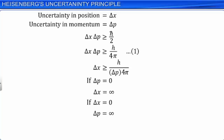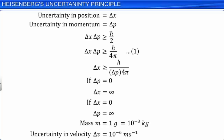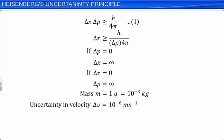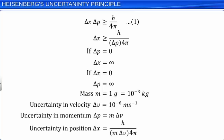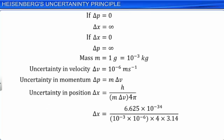To understand the uncertainty principle better, let us consider a projectile of mass 1 gram (10⁻³ kg), moving such that the uncertainty in its velocity, delta v, is equal to 10⁻⁶ meter per second. Then the uncertainty in its momentum, delta p, will be equal to m·delta v. The minimum uncertainty in the position of the particle is delta x = h/(m·delta v·4π). Substituting the values of the variables involved and solving, we get delta x very negligible, and hence the uncertainty in the position of macroscopic objects around us is very difficult to visualize.